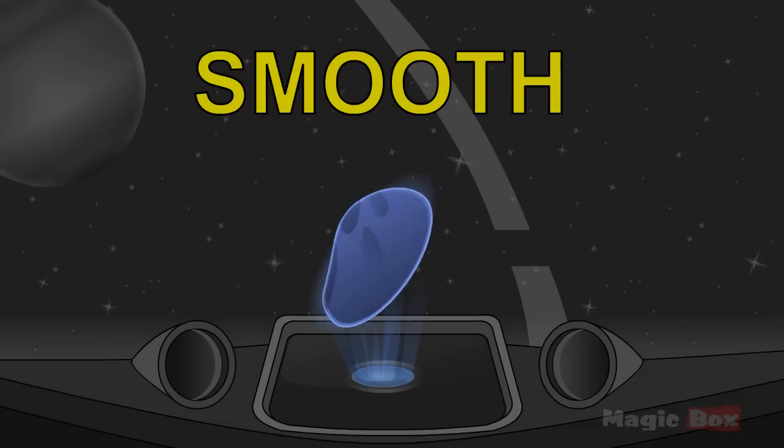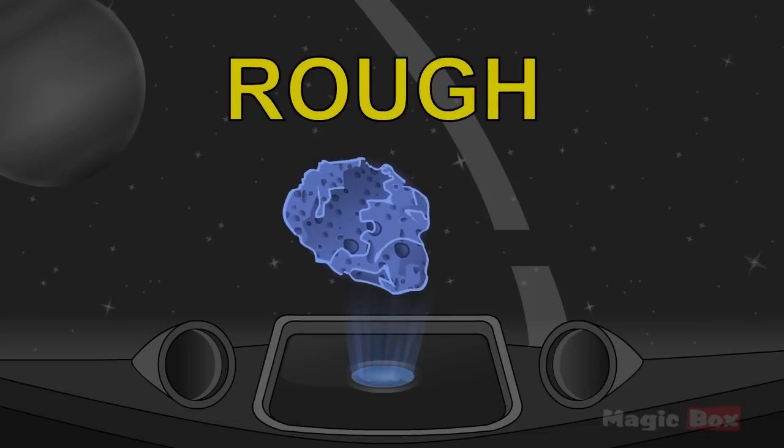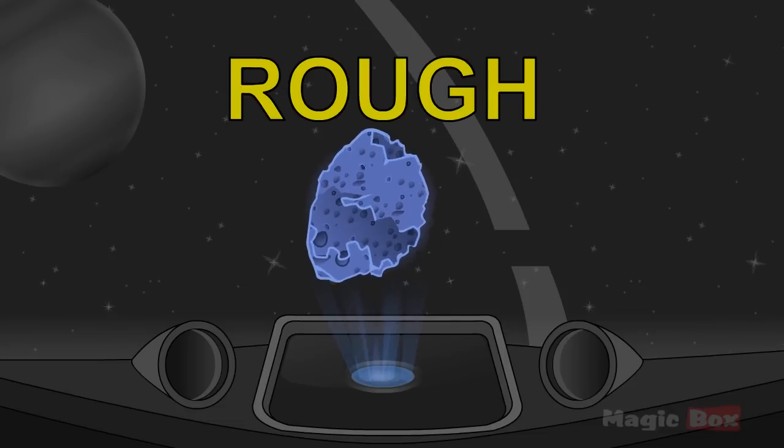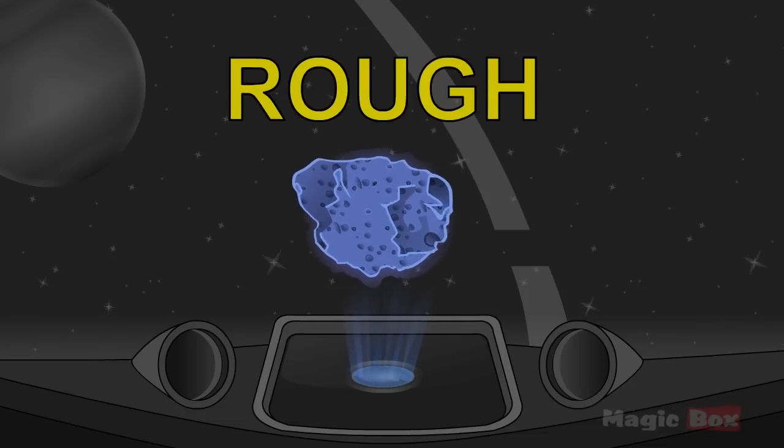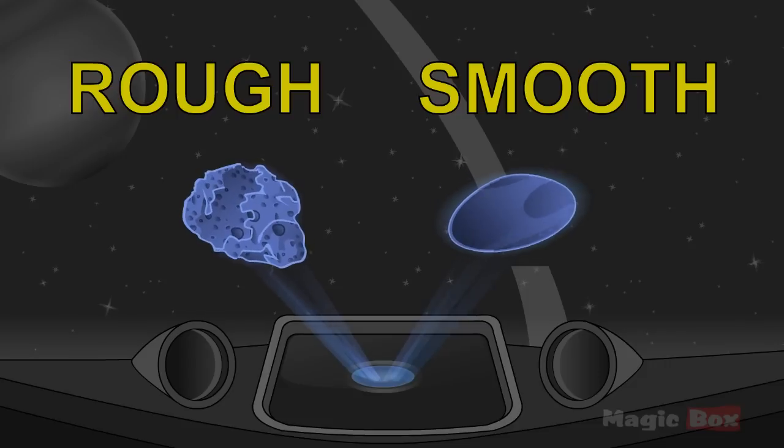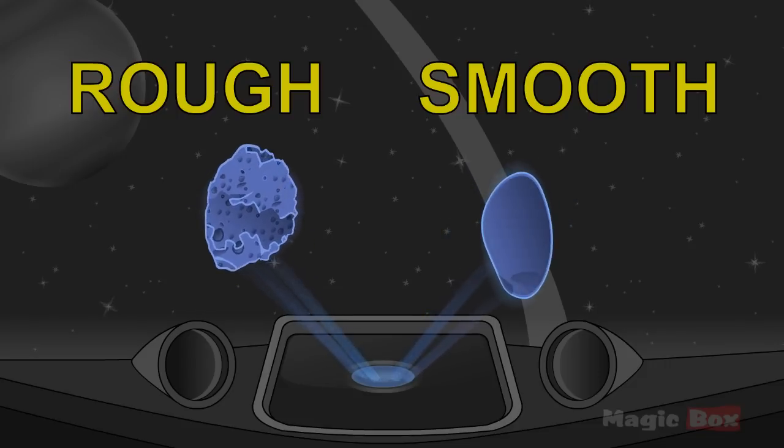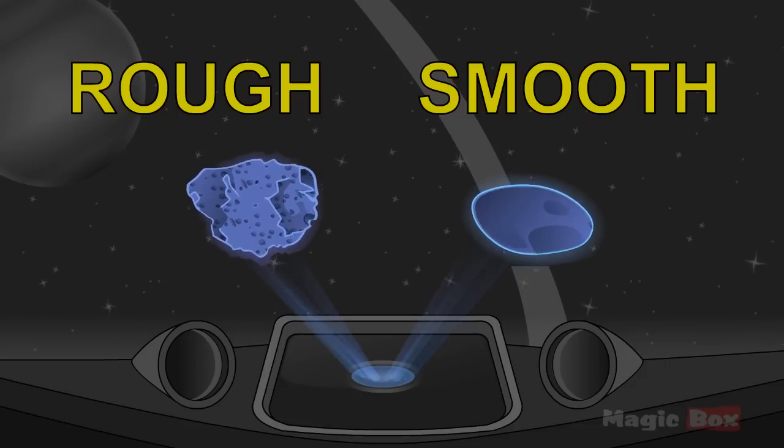Rough and smooth. When a thing is not even, it is called rough. So this is rough. And when it is even, it is called smooth. So rough and smooth.